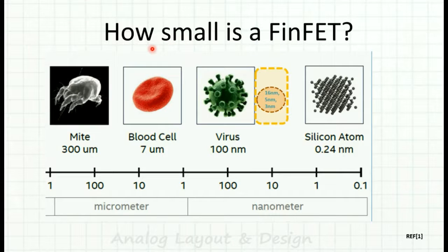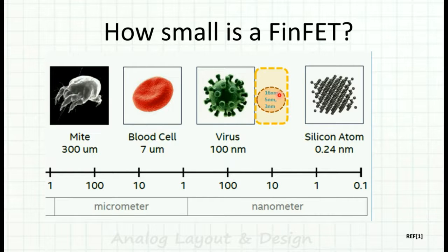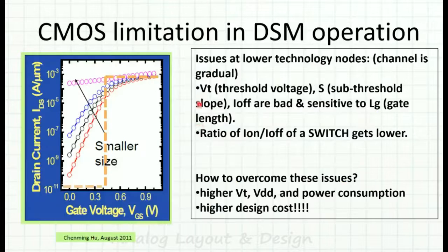Let's understand where we stand in terms of scaling — how small a transistor are we producing now. A blood cell is 7 micrometers, a virus is 100 nanometers, and a silicon atom itself is 0.24 nanometers. We are somewhere in between. Contemporary FinFET technologies are at 16 nanometer, 5 nanometer, and 3 nanometer nodes.